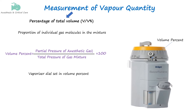Expression of the quantity of anesthetic gas in percentage is important because the vaporizer dial is set to deliver gas in proportion to oxygen, air, or nitrous oxide. Anesthesiologists often need to adjust the concentration of anesthetic gases delivered to the patient, and percentages are straightforward for setting and adjusting concentrations on vaporizers. The minimum alveolar concentration (MAC), which determines anesthetic potency, is also expressed in volume percent, ensuring that the value remains consistent regardless of changes in atmospheric pressure.